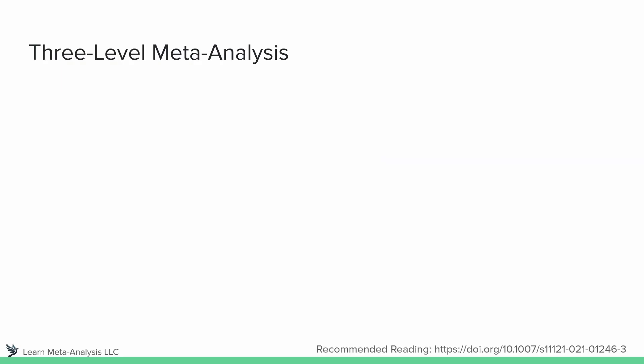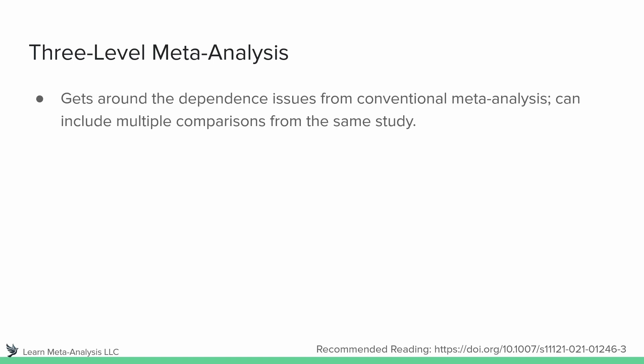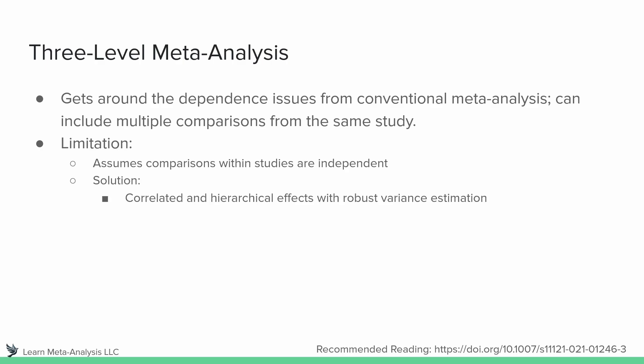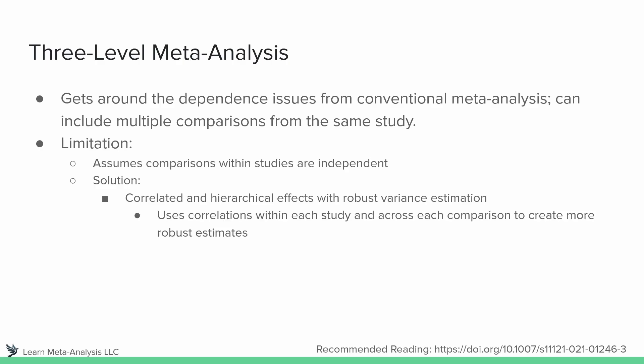More recently, we've been seeing more and more three-level meta-analyses, and these offer great advantages compared to the conventional meta-analysis. It gets around the dependence issue because we can actually include multiple comparisons from the same study. There is a limitation, though: it still assumes comparisons within studies are independent, but there are solutions to this. One of them is using correlated and hierarchical effects with robust variance estimation. Essentially what we're doing is using correlations within each study and across each comparison to create more robust estimates. That's a conceptual explanation — not a purely accurate statistical one — but it gets you in the mental ballpark.